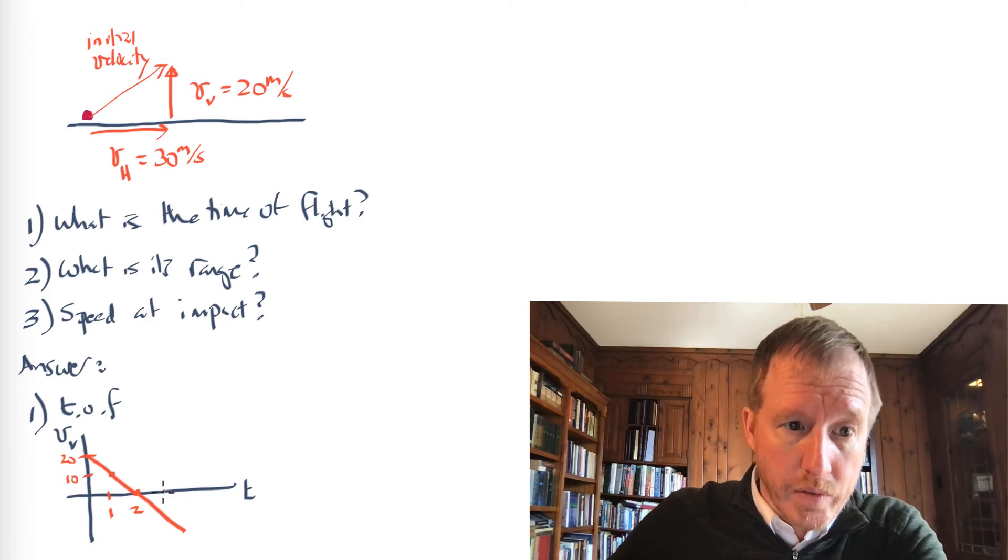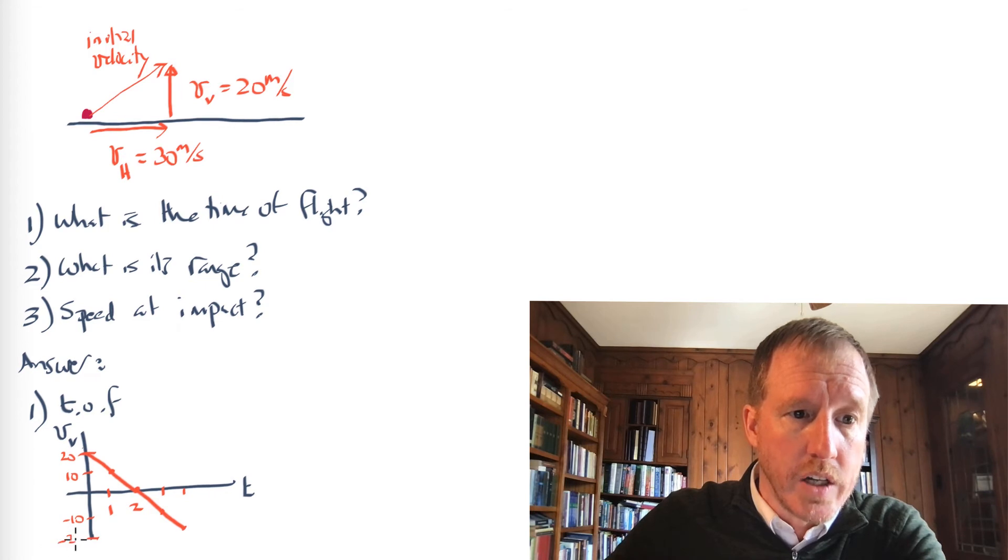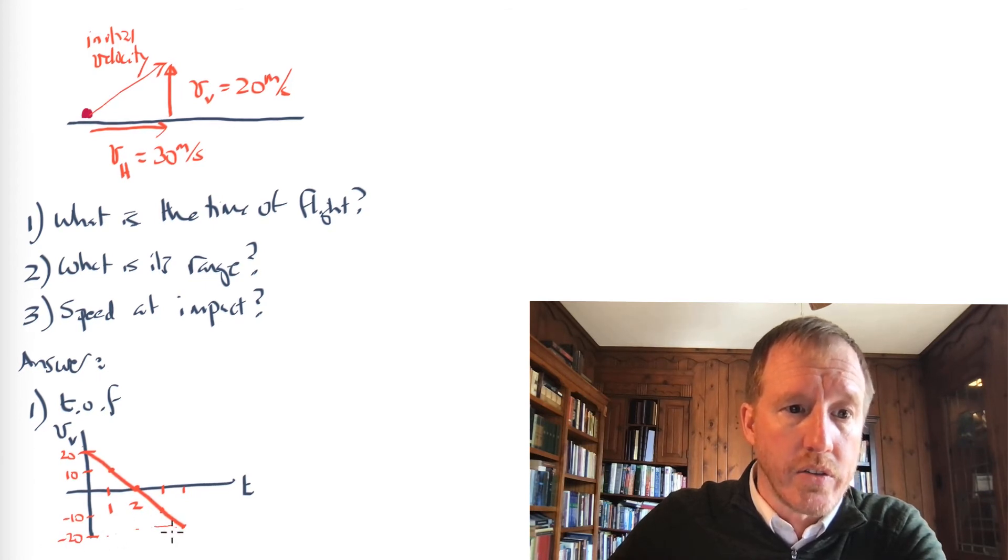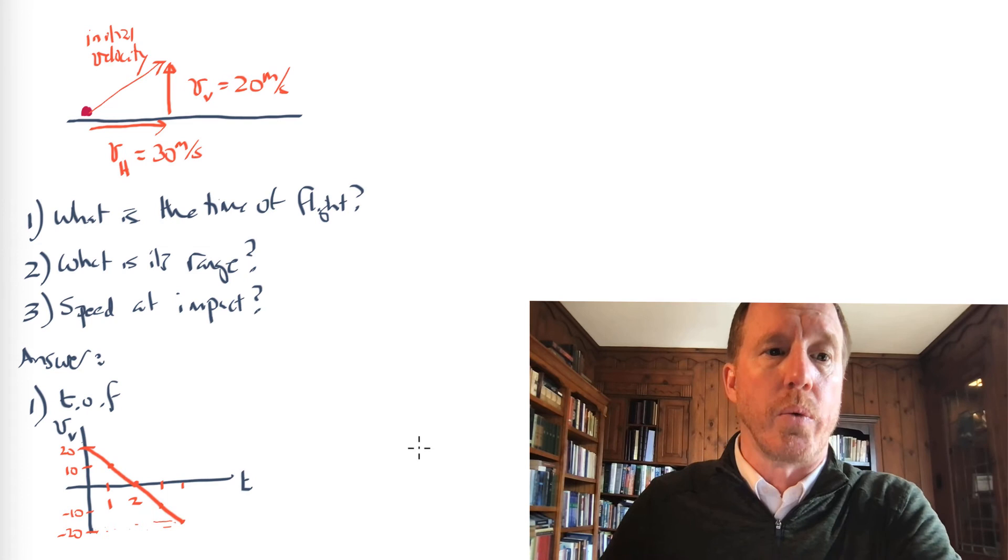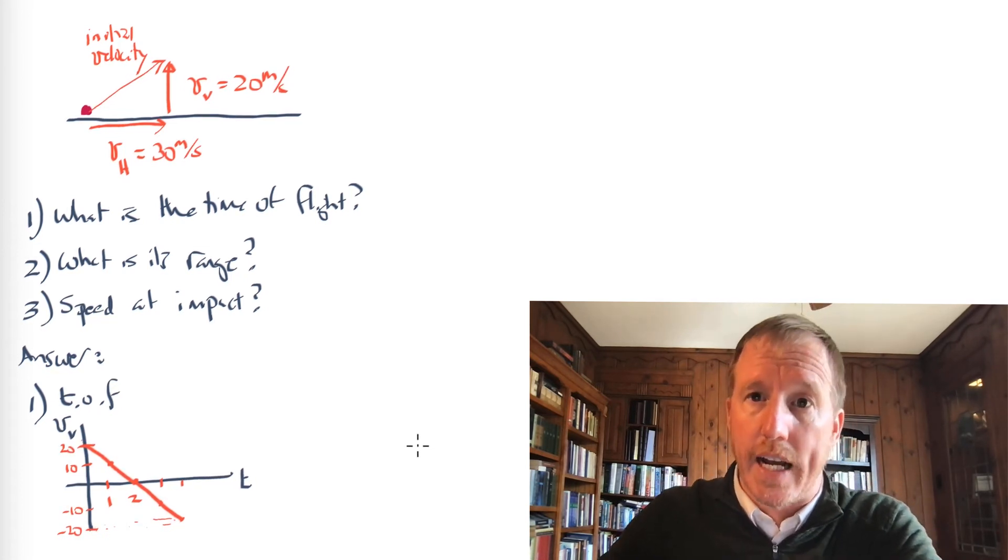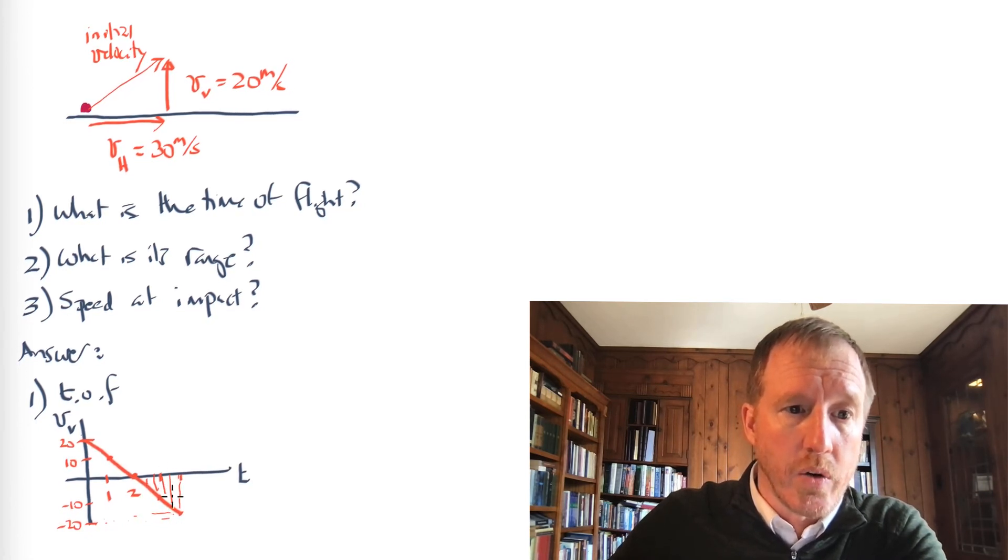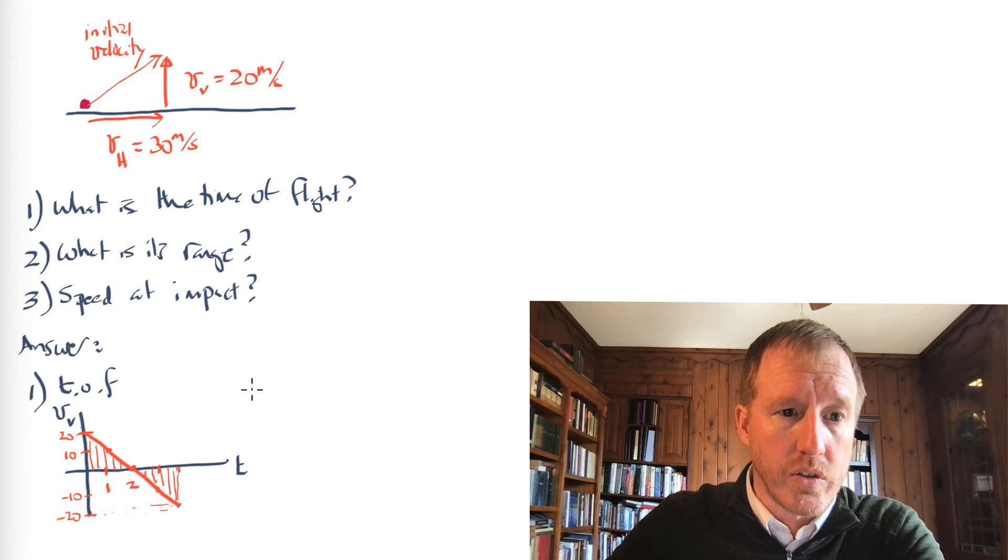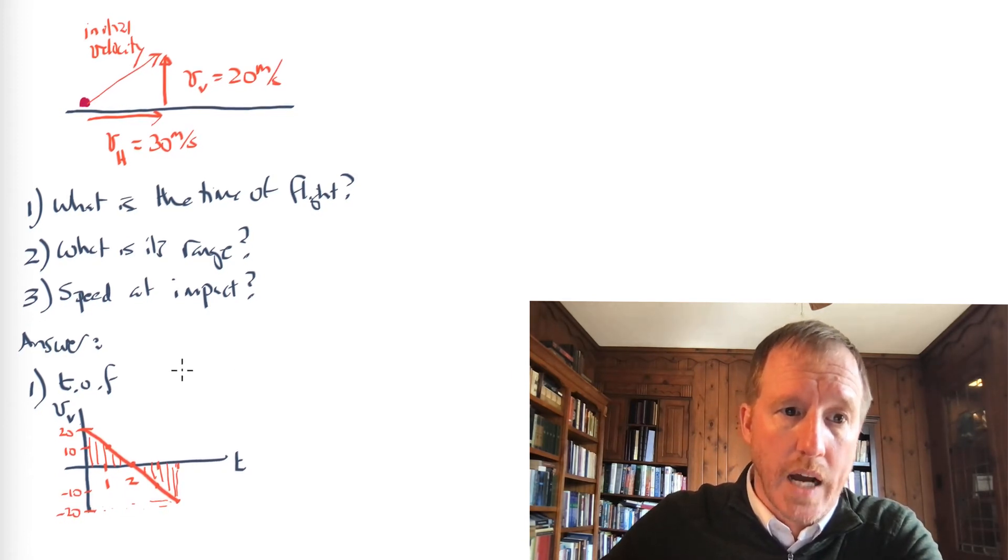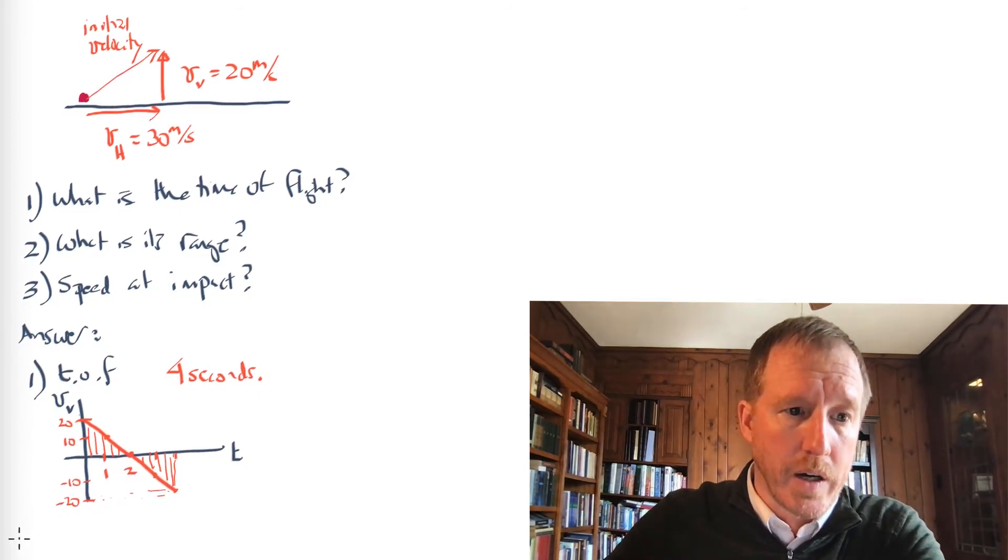So after three seconds, then it will be going downward at a speed of negative 10 meters per second. And after four seconds, which would be the time of flight, it's going downward at negative 20 meters per second. If you're not convinced as to why it's in the air for four seconds, you might think about the area under this triangle represents the distance it goes on the way up. And then on the way down, it must cover the exact same distance. And that would be the area that is in this triangle right here. So this area corresponds to the distance it falls, and this area corresponds to the distance that it rises. So in other words, it takes two seconds to get to the peak, two more seconds to get to the ground. And so the time of flight is four seconds. Okay, that's pretty straightforward to solve that problem.